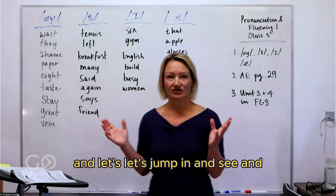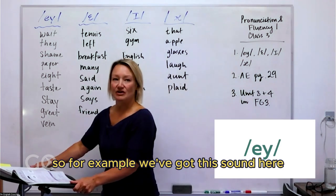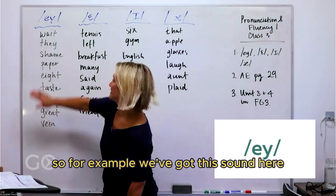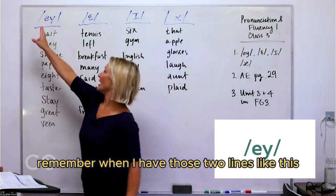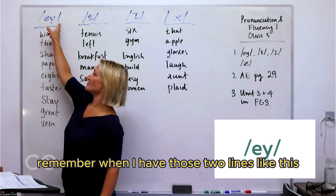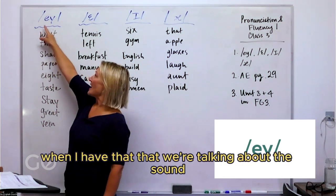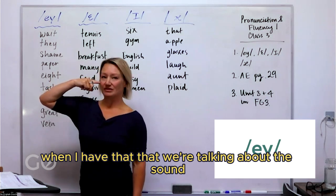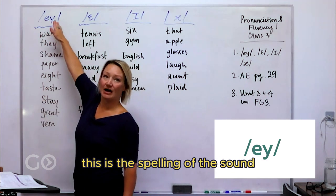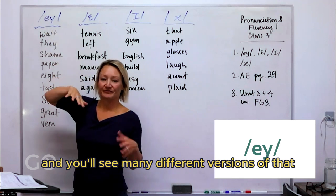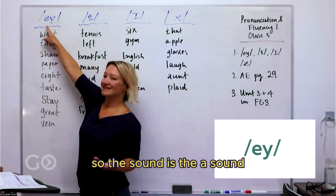And let's jump in and see — you'll see what I'm talking about. For example, we've got this sound here. When I have those two lines like this — we call these slash marks — we're talking about the sound, not the spelling. This is the spelling of the sound, and you'll see many different versions of that.